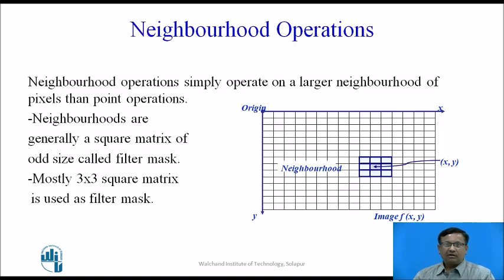First, we will see neighborhood operations. Neighborhood operations simply operate on a larger neighborhood of pixels than point operations. We can look at the sample image on the right side, which has y-rows and x-columns. The neighborhood operation taken here is 3x3. Neighborhoods are generally a square matrix of odd size called a filter mask, and mostly a 3x3 square matrix is used.